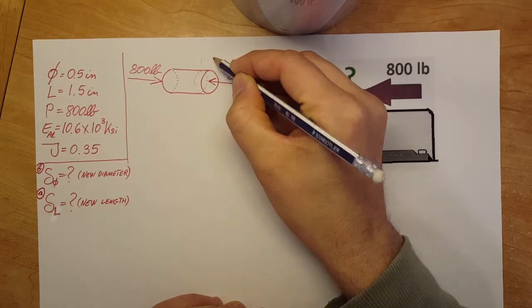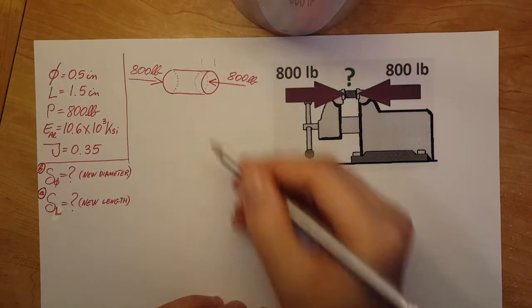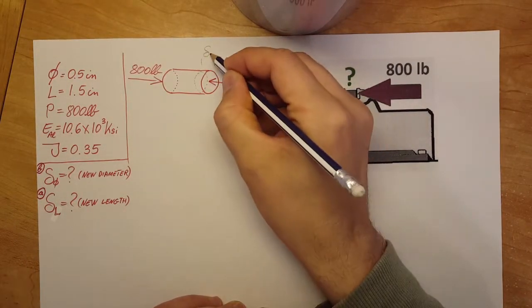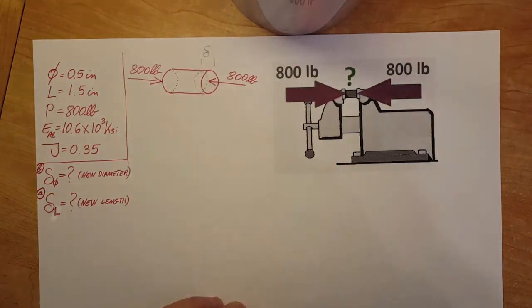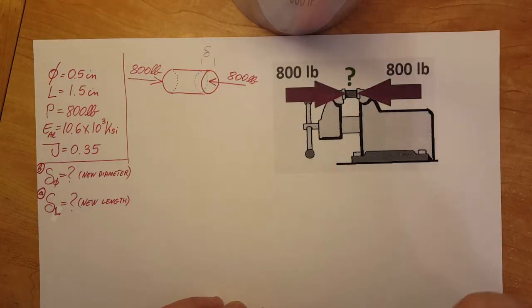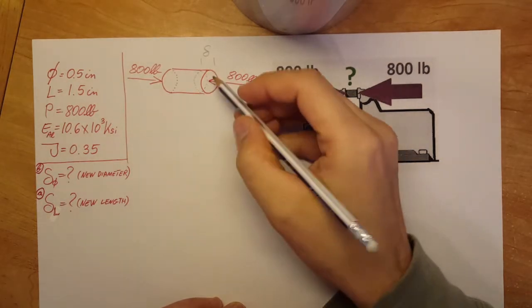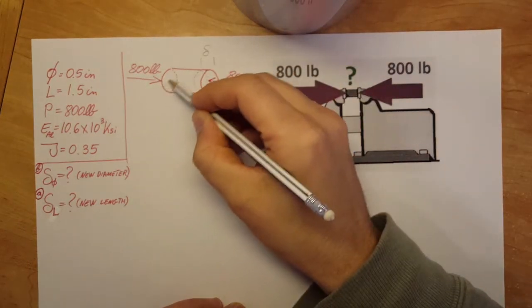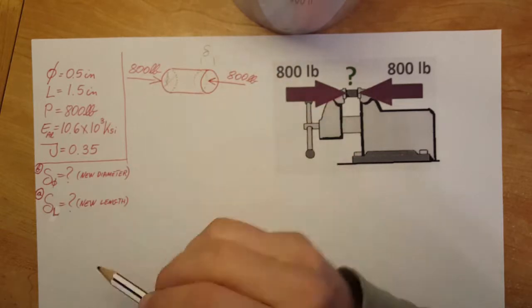It's going to go from this length and shrink down to this length right here. So this will be the change in its length, we can mark it as delta. Now we also know that it has a diameter, let me mark it right here.